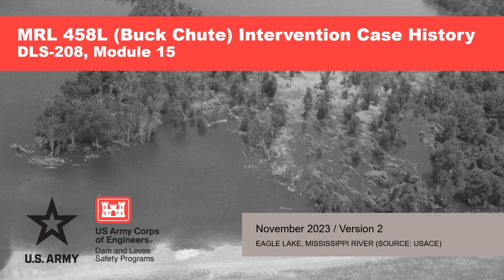This presentation is a continuation of the case history of the 2011 Mississippi River flood at Buck Chute Levee. The first part examined the flood event and evaluated the factors that made backward erosion piping more likely and less likely to occur. This portion will examine the intervention activities that were performed at Buck Chute and evaluate their effectiveness at the prevention of levee breach due to BEP.